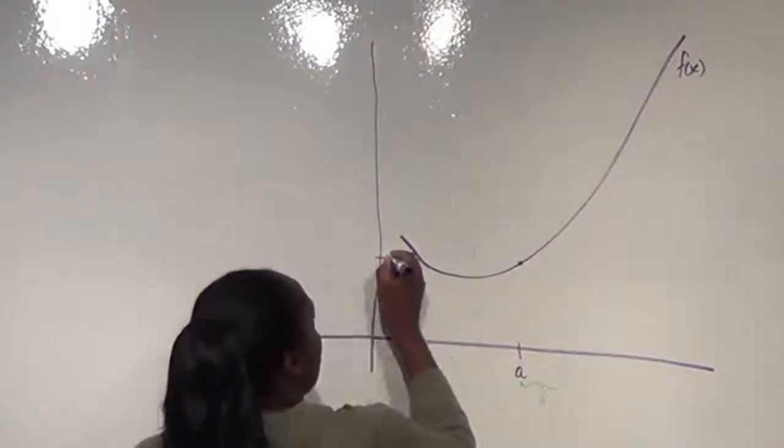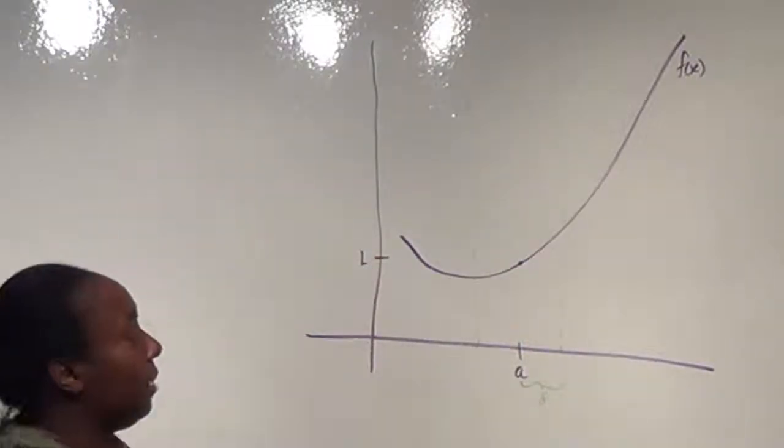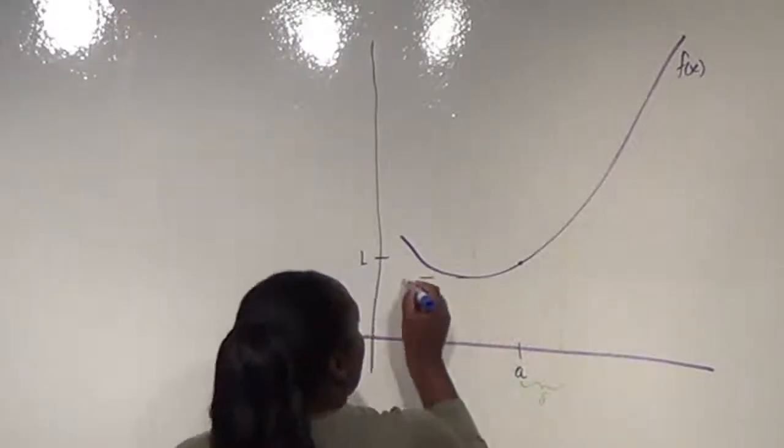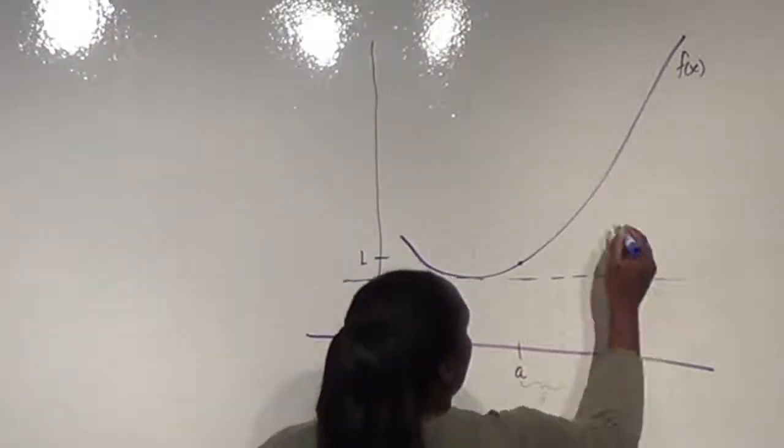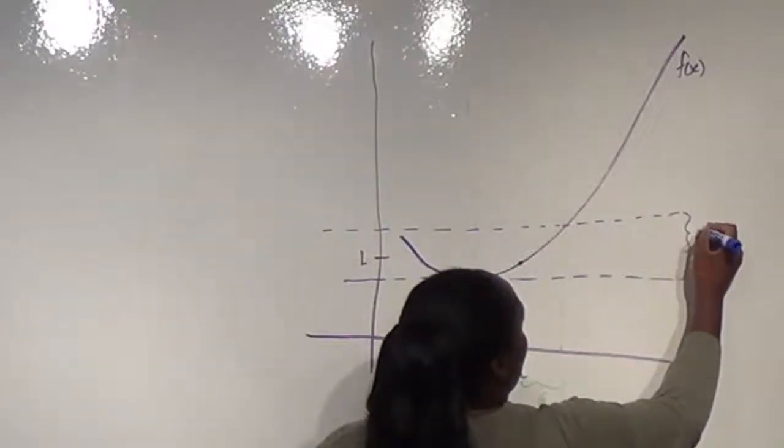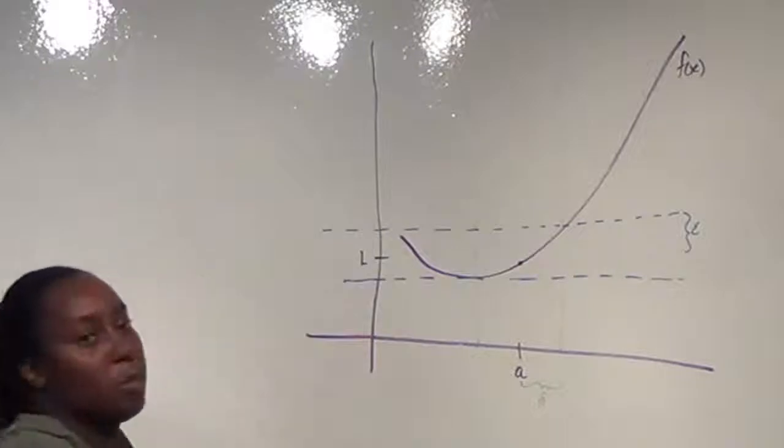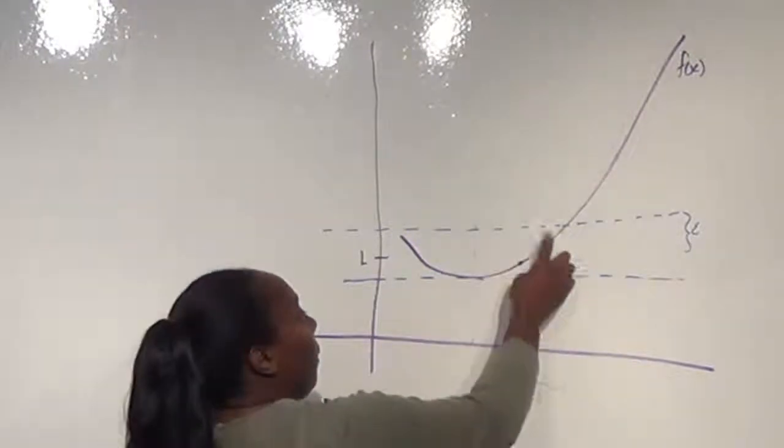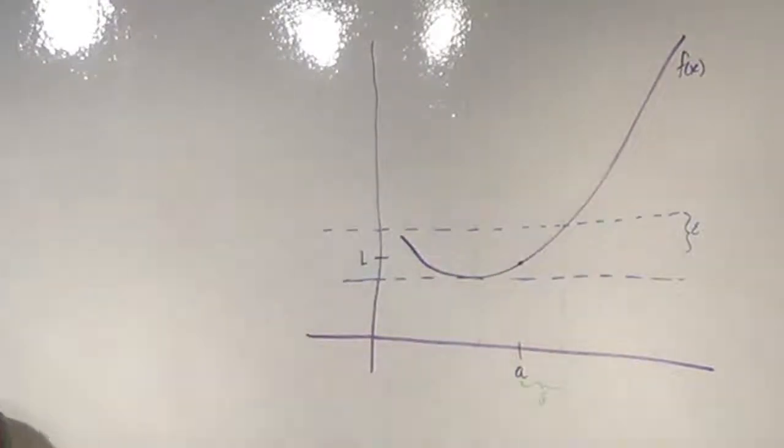Then what this tells us is that the limit as x goes to a is going to be bounded between an interval with radius epsilon in the y direction. And so there's this small window where our limit can exist.